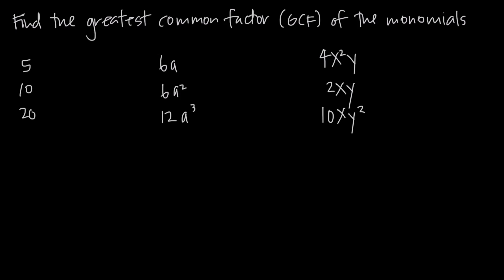In this video, we're talking about how to find the greatest common factor of a few monomials, and we've been given three examples. In the first example, we've been asked to find the greatest common factor of our three monomials: 5, 10, and 20.